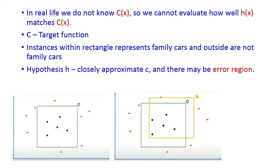In real life, we do not know the original class C. When we train our machine, we get hypothesis H. Initially we train our machine with this hypothesis and get the H class. But the original class is C, so there is a difference between them because H is an approximation of C. Hence there is an error region — those regions are the error regions between C and H.